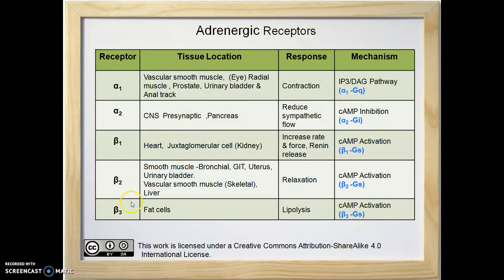Beta-2 and beta-3 receptors are also GS protein coupled receptors and act by activation of cyclic AMP. Beta-2 receptors are mainly located in bronchial smooth muscles, gastrointestinal tract, uterus, urinary bladder, and vascular smooth muscle. At all these sites, activation of beta-2 receptors causes relaxation.